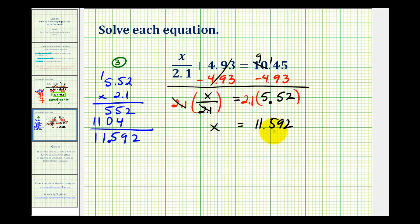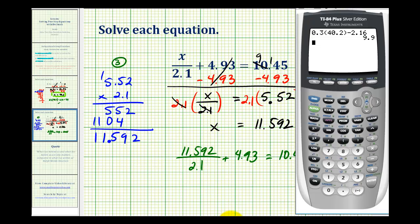If this solution is correct, if we replace x with this value, it should satisfy the original equation. Which means 11.592 divided by 2.1 plus 4.93 must equal 10.45. Let's go ahead and check that. And, once again, this verifies that our solution is correct.